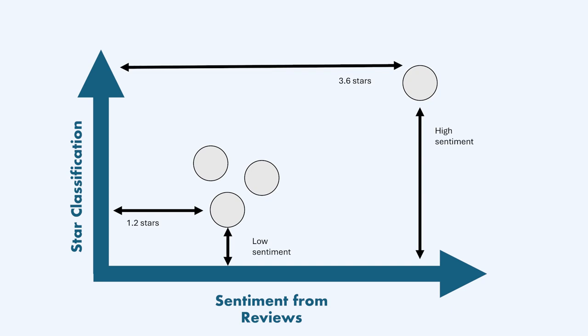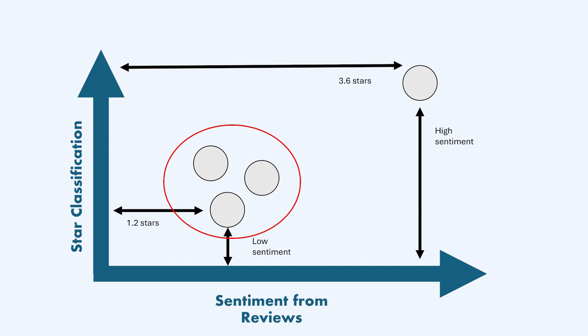Then you classify each restaurant according to review sentiments and mean star classification. Most likely, you will find two clusters: the restaurants with more stars and more positive emotion, and the restaurants with fewer stars and more negative emotion.